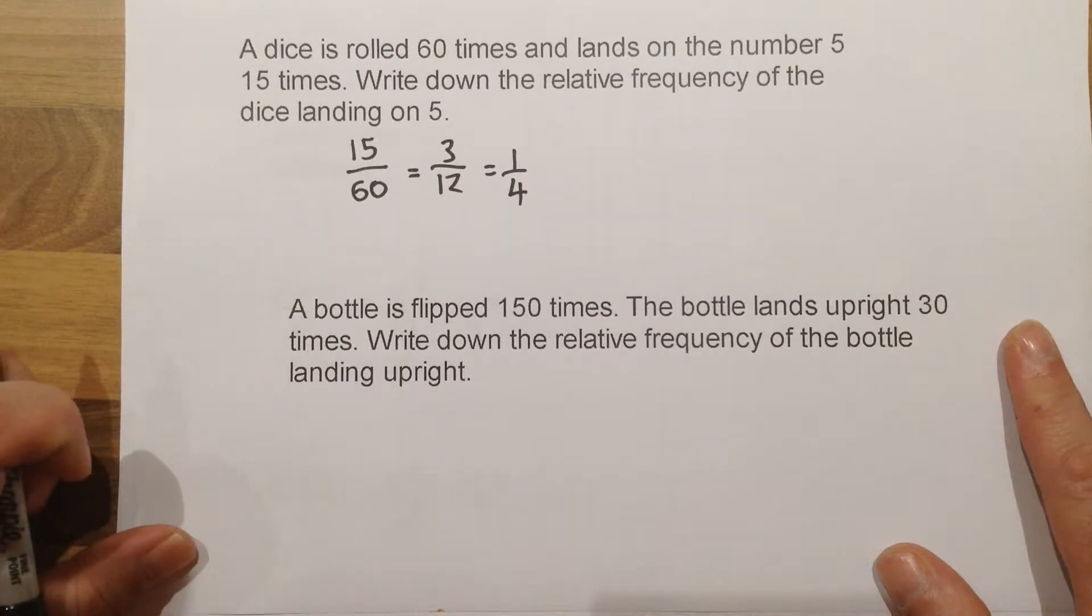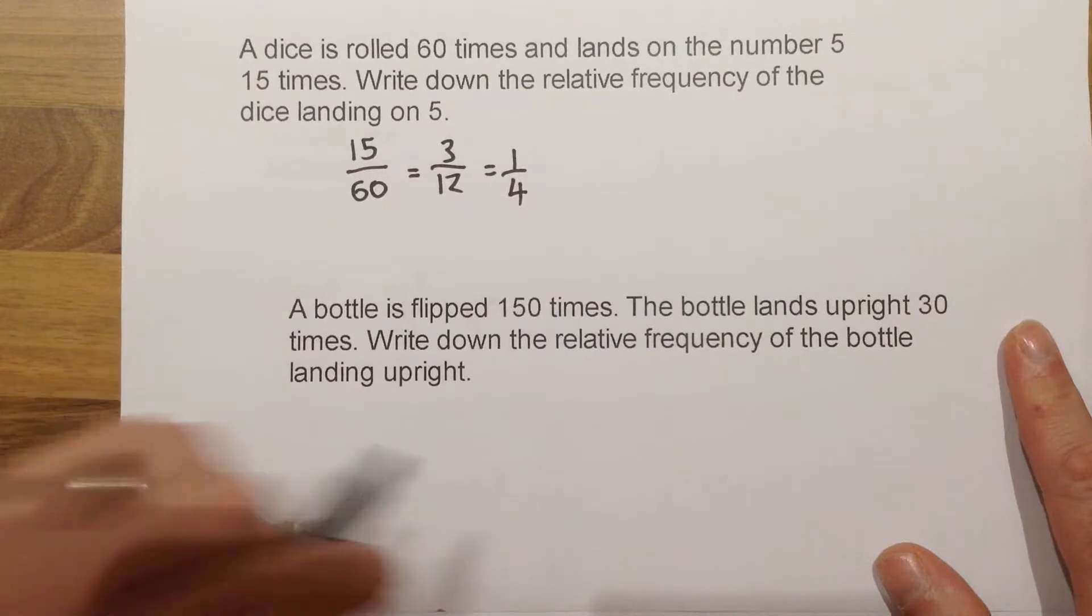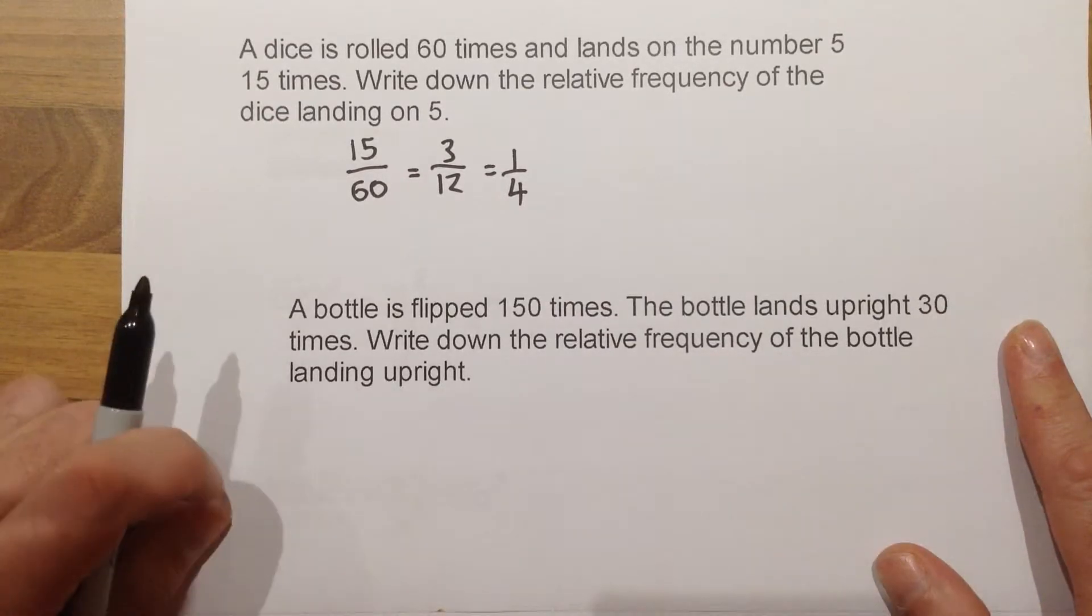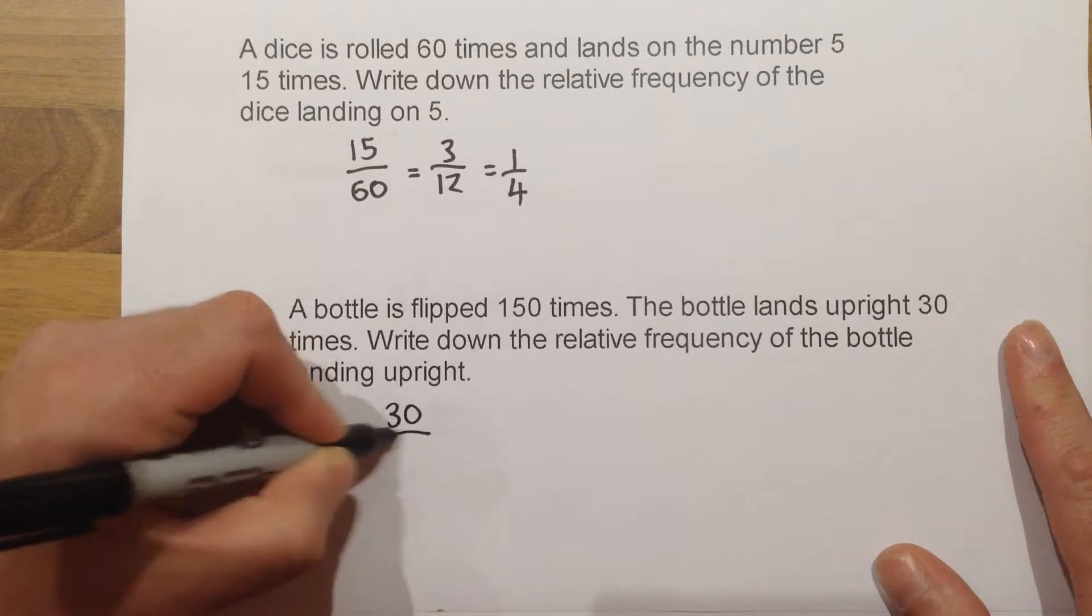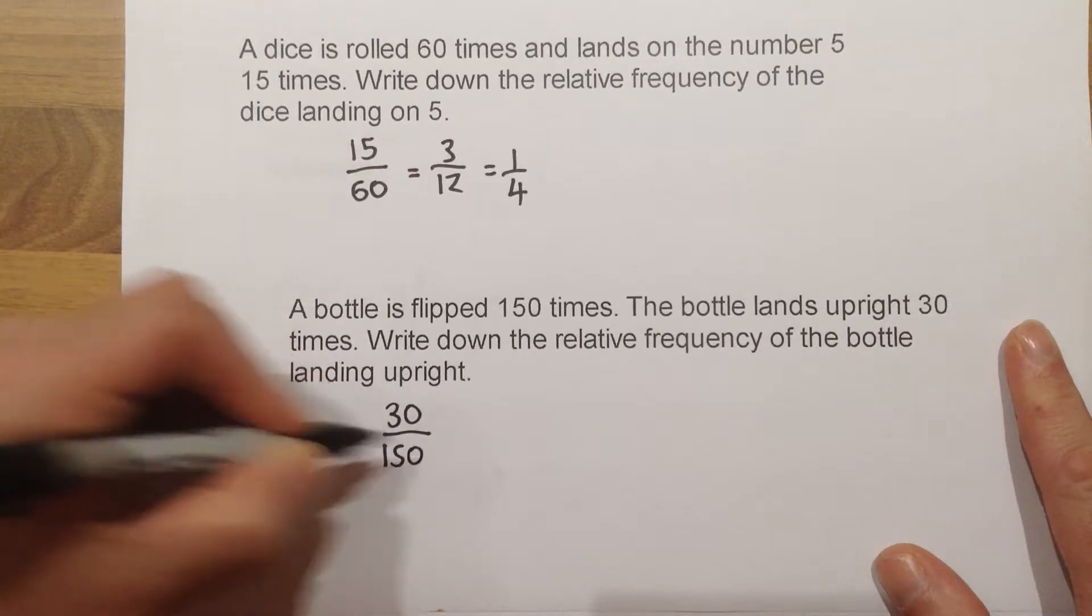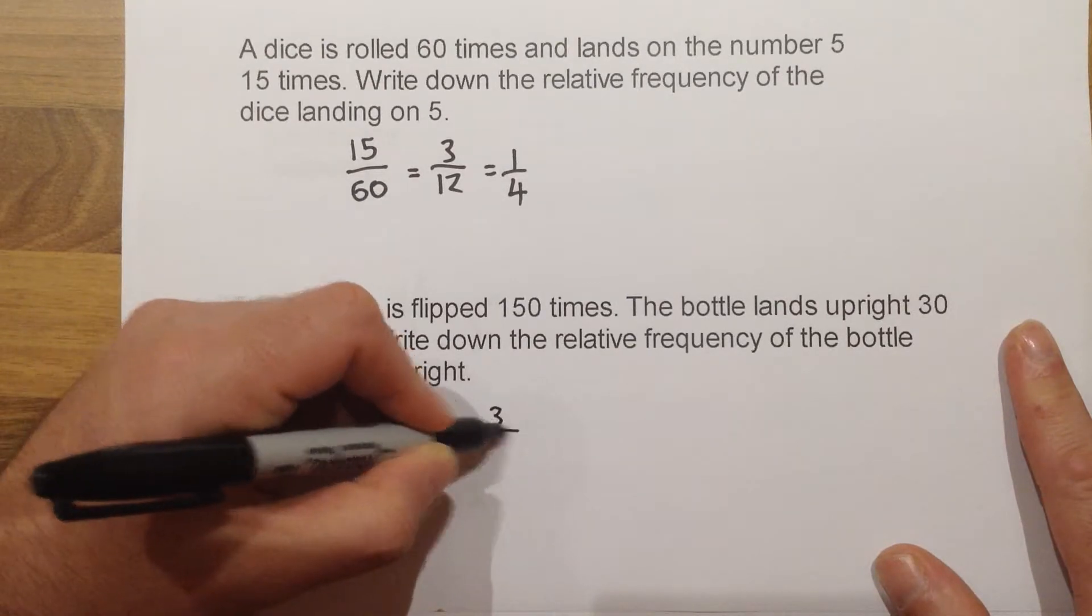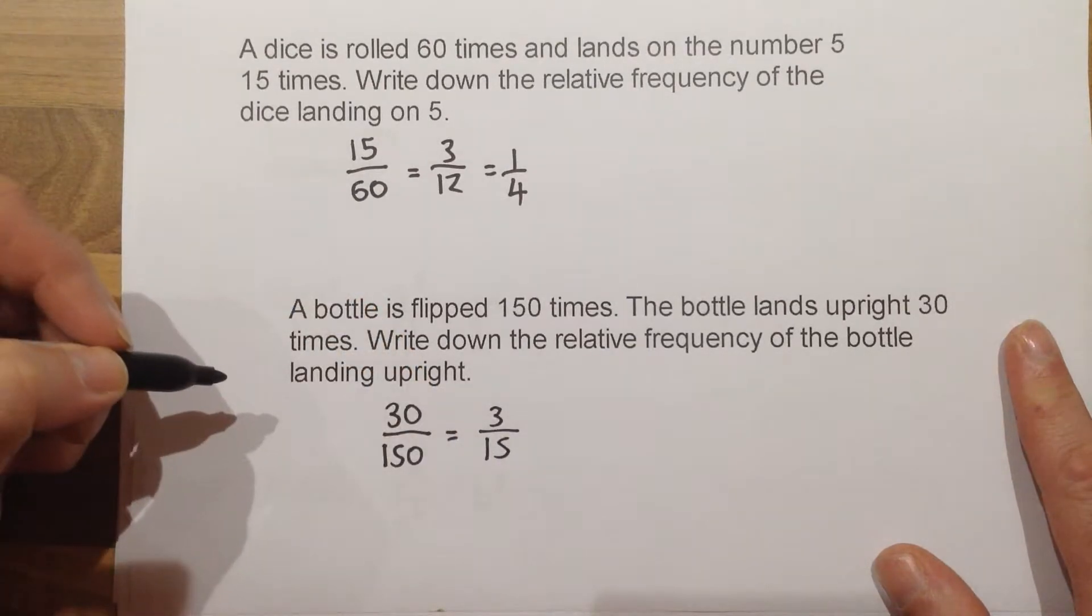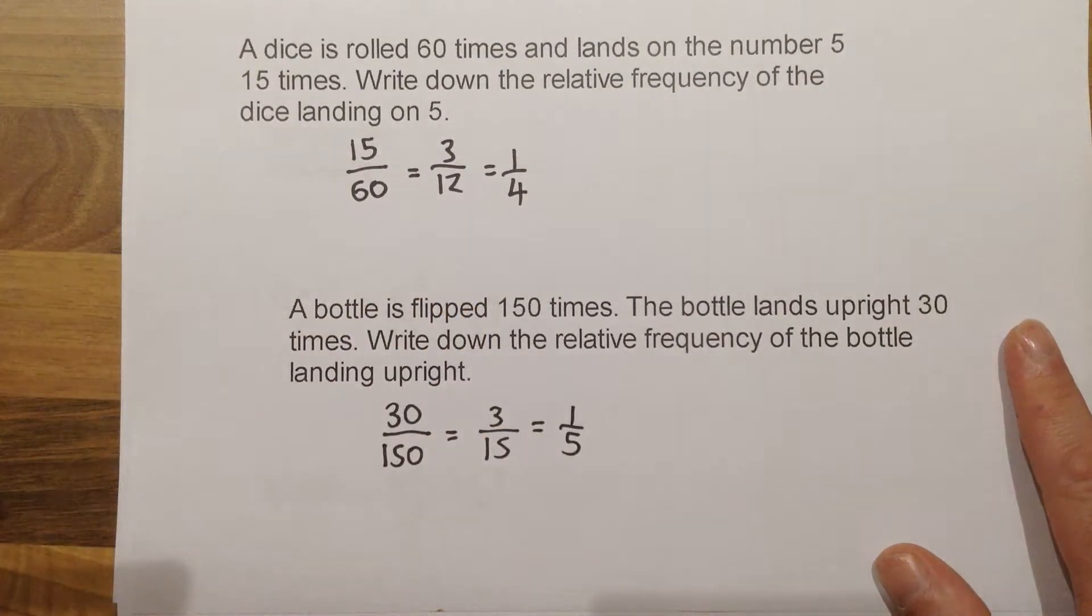Same goes for the next question. The event is happening 150 times. What we are wanting is for the bottle to land upright. So this would give us, as a relative frequency, 30 over 150. Again, simplifying, 3 over 15. And then there's our final answer, 1 over 5.